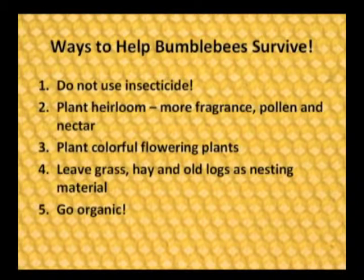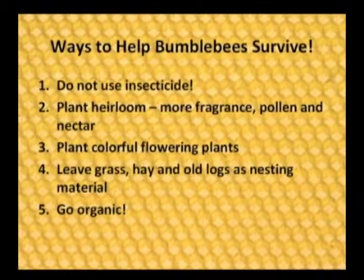There are ways we can all help bumblebees survive. Never use insecticide, herbicide, or any garden chemicals to kill weeds — there are natural methods for getting rid of weeds and certain insects without poison. Plant heirloom varieties of plants, which have more fragrance, more pollen, and more nectar. Bees can sense smell, so more fragrant plants help them find food. Plant colorful flowering plants, as bees can see patterns in nature and go right to them. If you have grass, hay, or old logs, leave them — they are great nesting material. Going organic, with no insecticides or herbicides, is the best thing for bees.